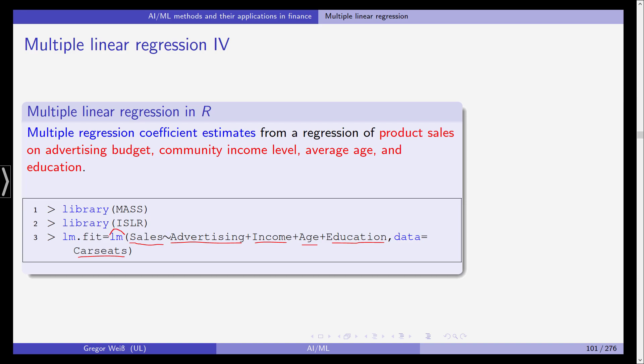And as you can see from the command, the syntax is as follows. Sales is explained and predicted by using advertising plus income plus age plus education. We are using the car seats data. We are fitting a linear model, and this is now written into our new variable LM.fit. We could also have called it results or results.fit. So LM.fit here is the object that includes the fitted linear model object.